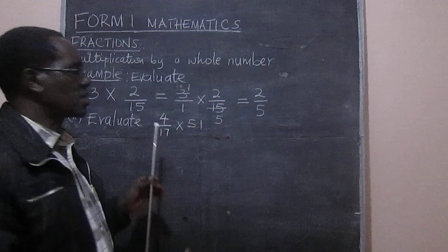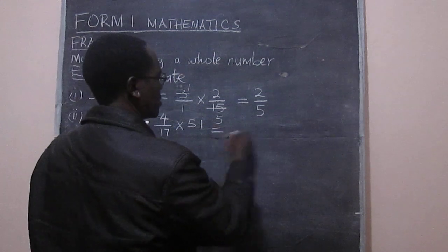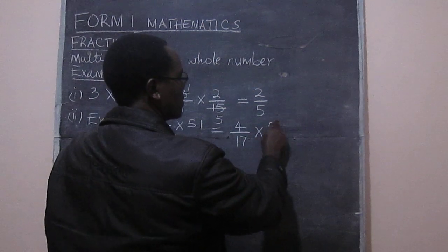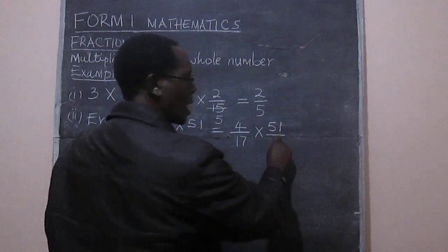We can do exactly what we did here. The 51, we write it like a fraction. So that we have 4 over 17 multiplied by 51 over 1.